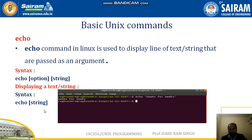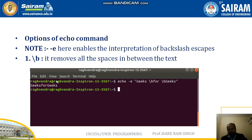Now let us see some basic commands in Unix. The echo command is used to display a line of text or string that is passed as an argument. The syntax of echo is: echo followed by a string. For example, 'echo geeks for geeks' — whatever string or text you write in front of echo, that will be your output.